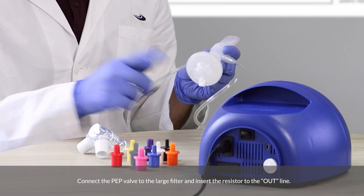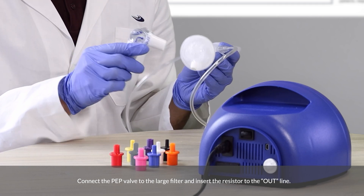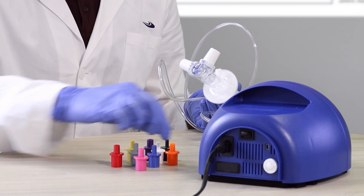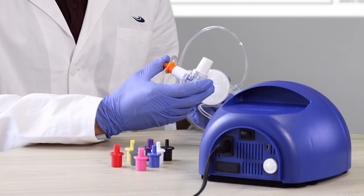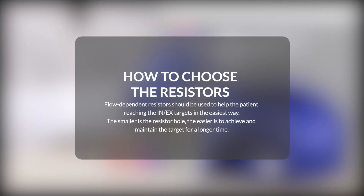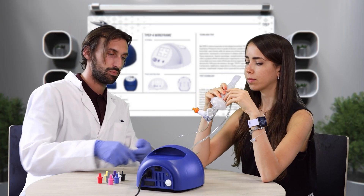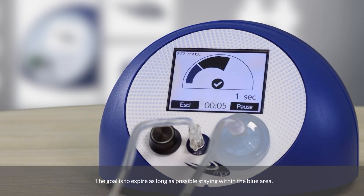Connect the PEP valve to the large filter and insert the resistor to the out line. Flow-dependent resistors should be used to help the patient reach the inspiratory-expiratory targets in the easiest way. The smaller the resistor hole, the easier it is to achieve and maintain the target for a longer time. The goal is to expire as long as possible, staying within the blue area.